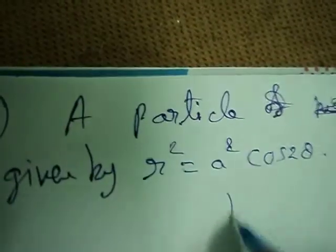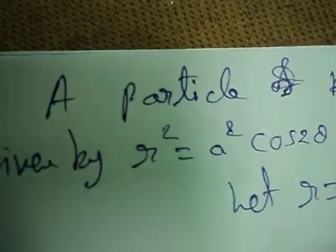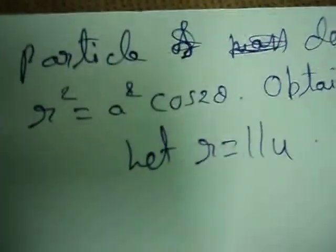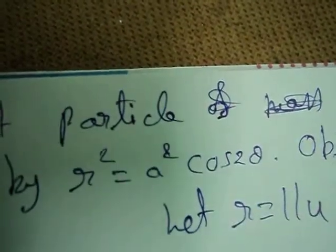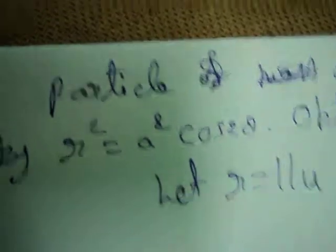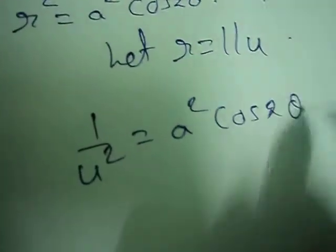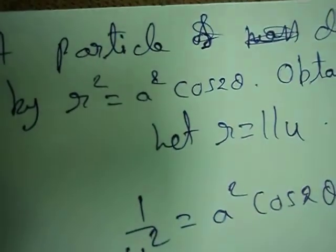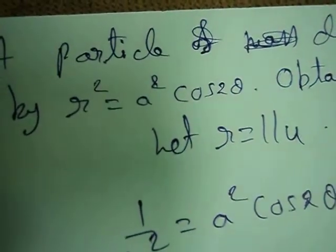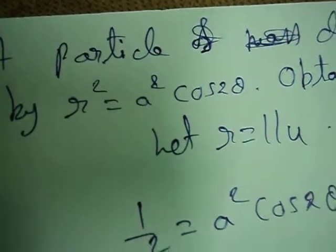Let r = 1/u. So 1/u² = a²·cos(2θ), which implies u²·a²·cos(2θ) = 1.